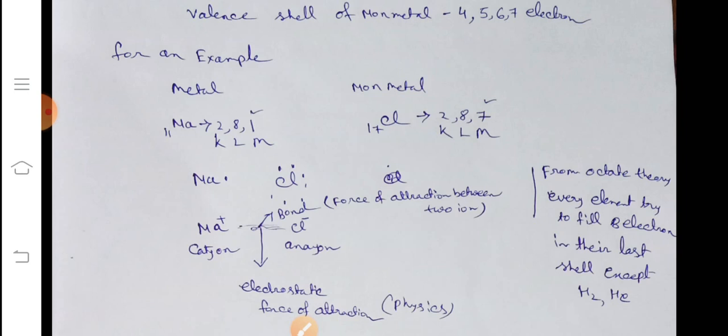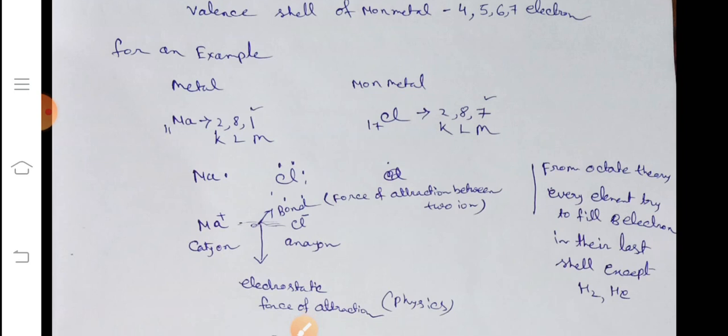If sodium gives the electron to chlorine, and chlorine gains the electron, and sodium loses the electron, then sodium will be positive, right? And chlorine will be negative because it gains the electron. Then it turns sodium is positive, that is cation.